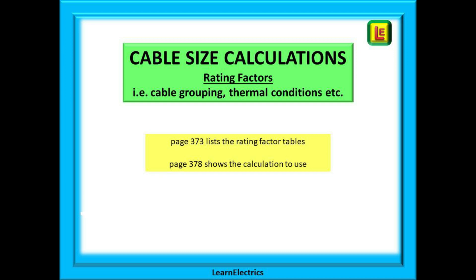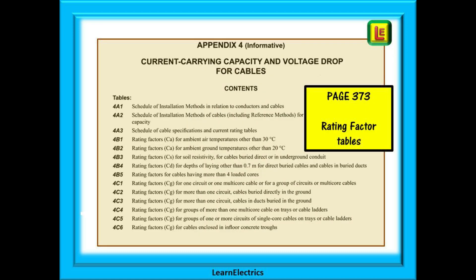We want the cable to be big enough to carry the full load current safely but not so big that it costs us or the customer too much money for extra copper. On page 373 we can see a list of tables that list data for all the conditions that might affect our cable. These are known as rating factor tables. Get to know them. It matters in the exam.